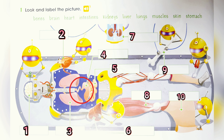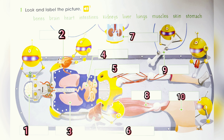Number four: What is this? The food passes through here — it is the stomach. Number five: What are these? They are the intestines.